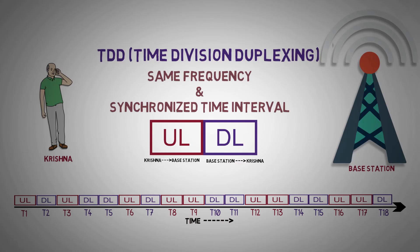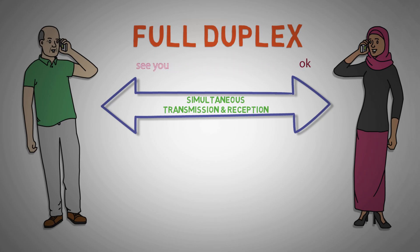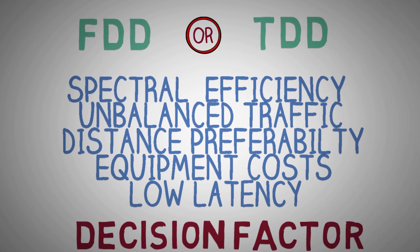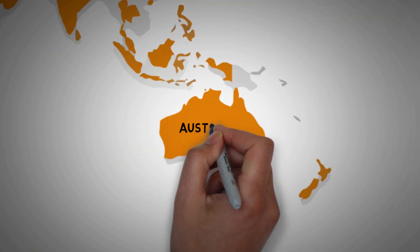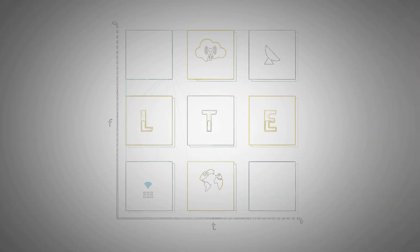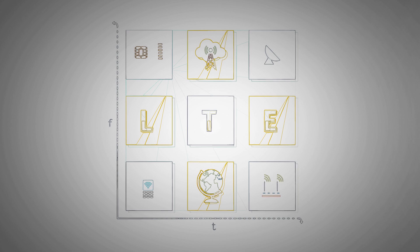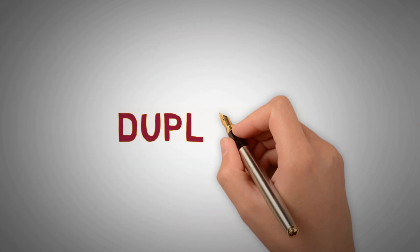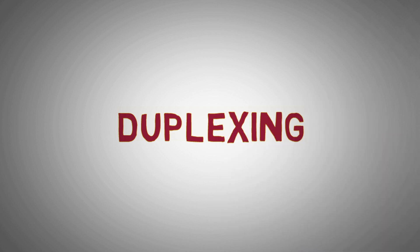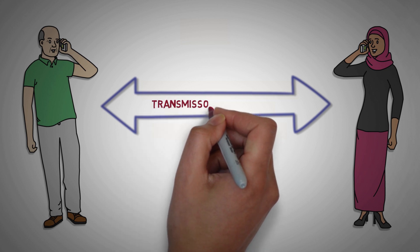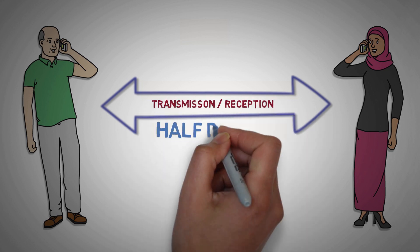How do we listen and speak at the same time over a communication channel? How does a telecom operator decide which duplexing method to use? Will the device that you use in China work in other parts of the world? Welcome back to the world of Long-Term Evolution, the fourth generation of communication system. Today we will be discussing duplexing — the process of achieving two-way communication over a communication channel.